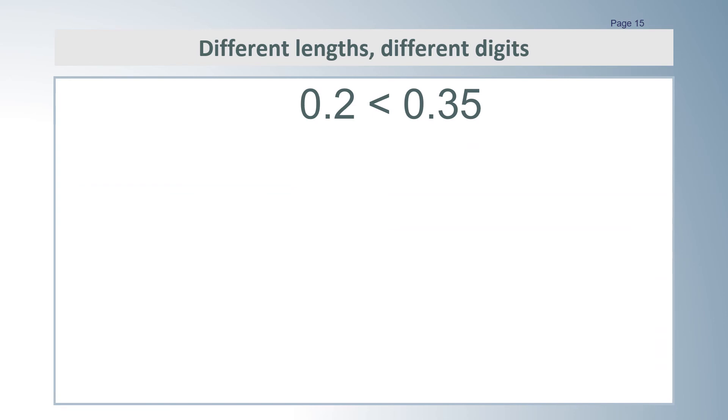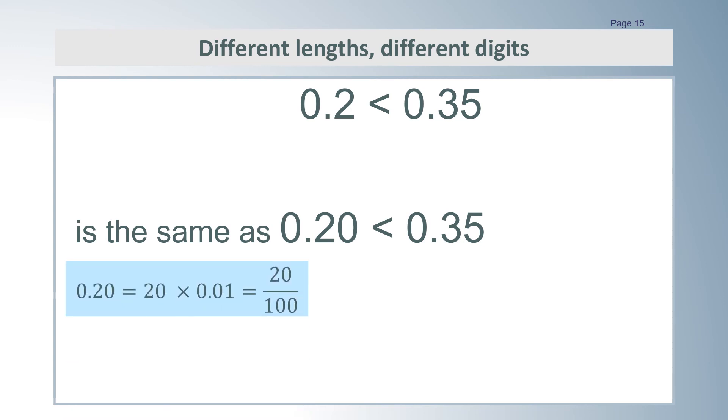Which is bigger out of 0.2 and 0.35? We can use the last method we learned for this example. We put a 0 after the 2 to make it the same length as the 0.35. We can see that 20 hundredths is less than 35 hundredths.